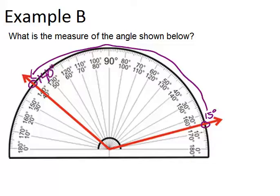That's using the upper set of numbers. The angle is the difference between those two, so 140 minus 15 equals 125 degrees. This angle is 125 degrees.